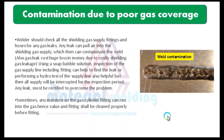Welders should check all shielding gas supply fittings and hoses for any gas leaks. Any leak can pull air into the shielding gas supply, which can contaminate the weld. Also, a gas leak causes significant financial loss due to costly shielding gas wastage. Inspection of the gas supply line including fittings can help find the leak, and performing a hydro test is also helpful. Any leak must be rectified. Sometimes, moisture on the gas cylinder fitting can enter the gas, so valves and fittings shall be cleaned properly before fitting.